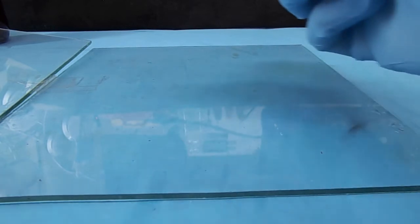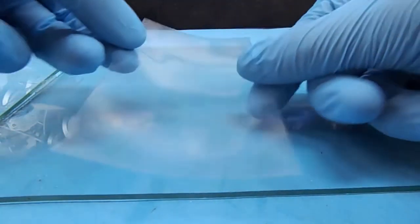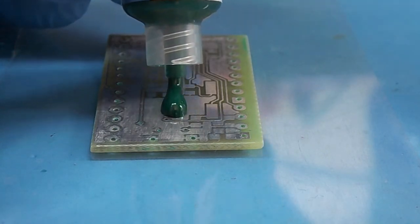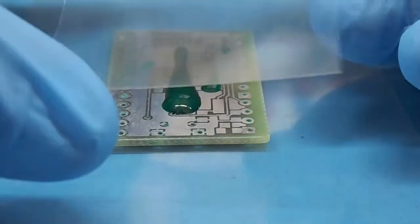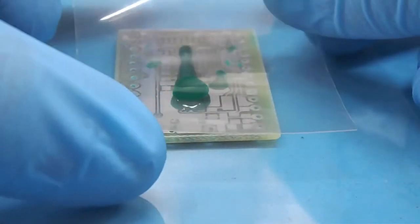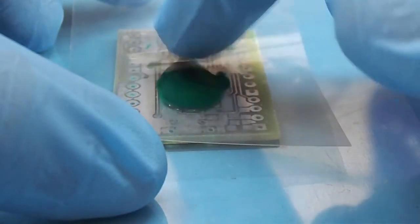Put a piece of transparent paper under PCB, then apply small amount of UV solder mask. Another piece of transparent paper above. Apply pressure and use the squeegee to spread the paint. Don't apply too much pressure.